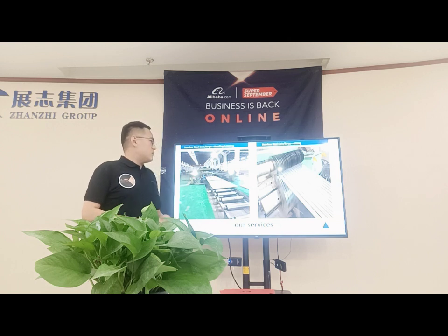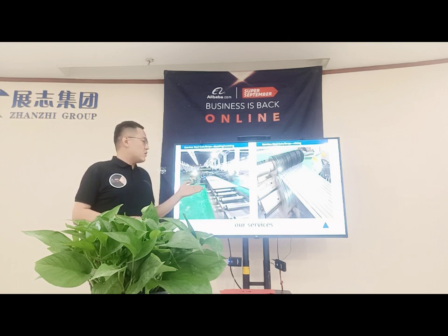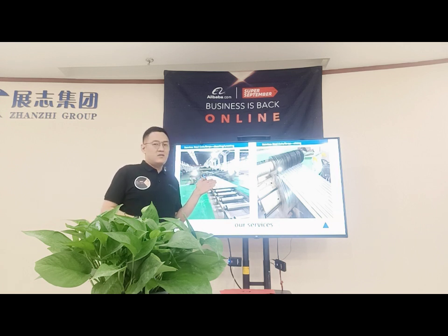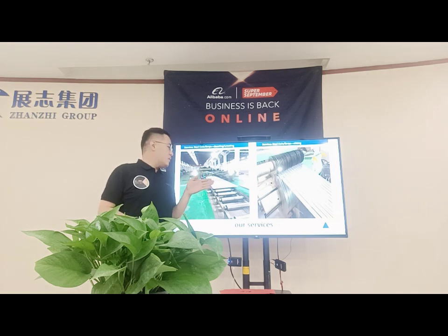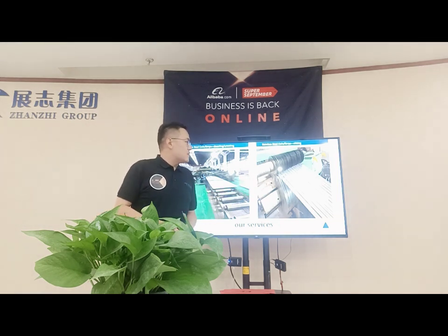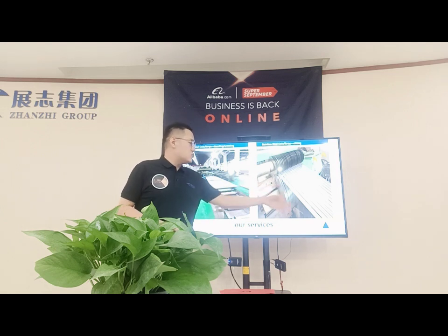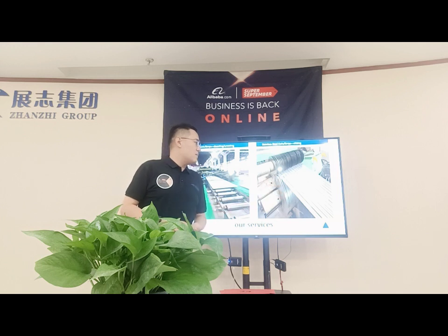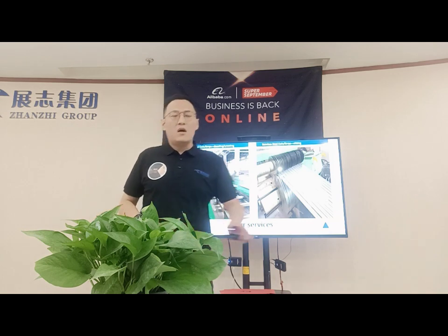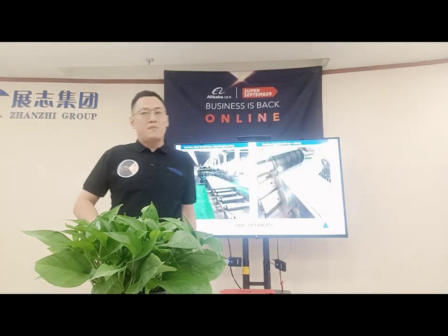Besides the stock in the warehouse, we also have processing plants. The first picture shows the stainless steel coil decoiling machine — we use this machine to decoil the big coil into flat plates. This picture shows the slitting machine — we use this machine to slit the big coil into narrow strips. The minimum width of the strip can be 2 millimeter.